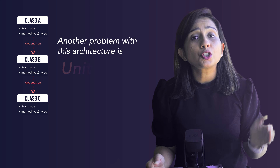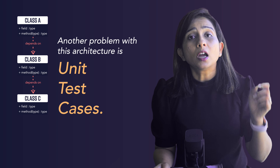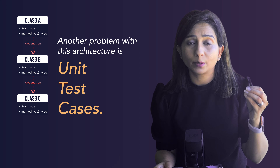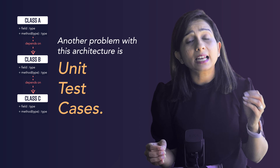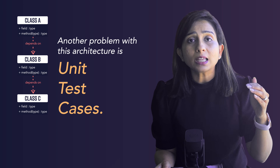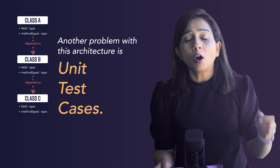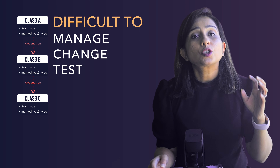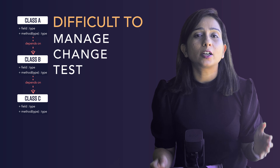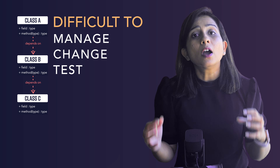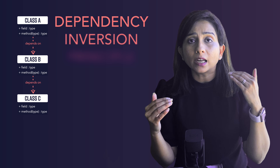The second problem is when you're trying to write unit tests for these classes. If you want to write a unit test for class A, since it depends on class B, you have to somehow mock the dependency on class C. This creates a dependency chain from A to B to C. This kind of code is difficult to manage, difficult to change, and difficult to test. So that we can test this code easily and make changes to the code base easily, we come up with the Dependency Inversion Principle.